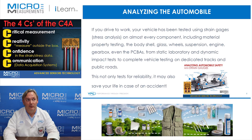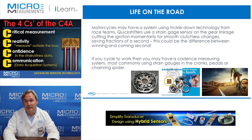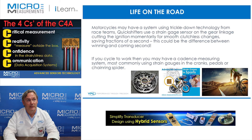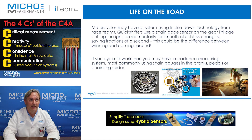Life on the road. Motorcycles may have a system using trickle-down technology from race teams. Quick shifters use a strain gauge sensor on the gear linkage, cutting the ignition momentarily for smooth clutchless changes, saving fractions of a second — which could be a big difference between winning and losing when you're racing.